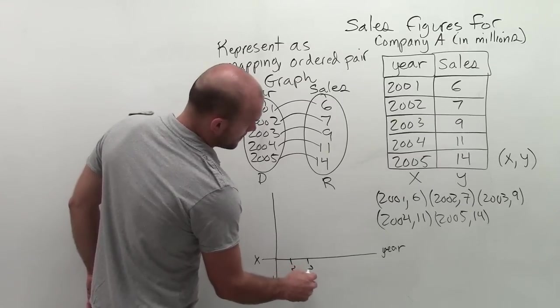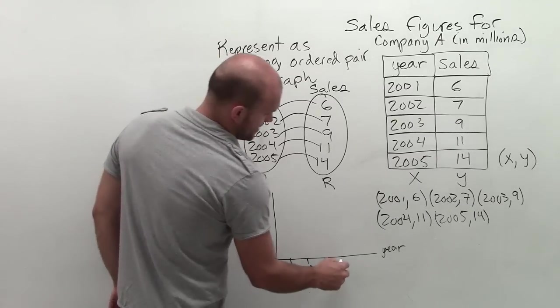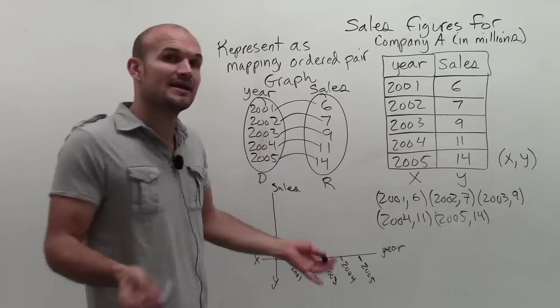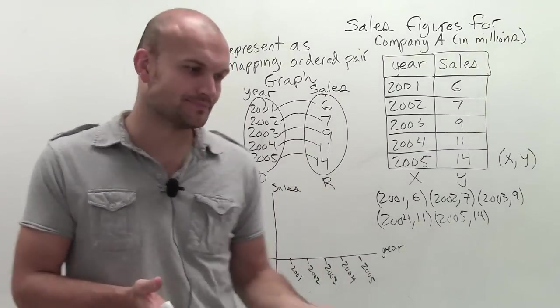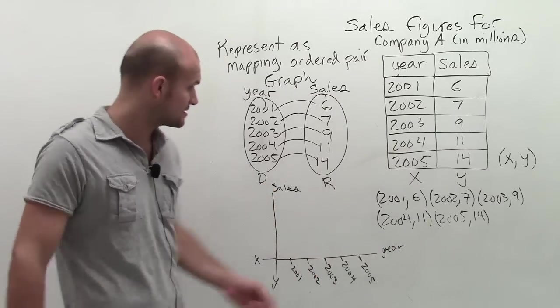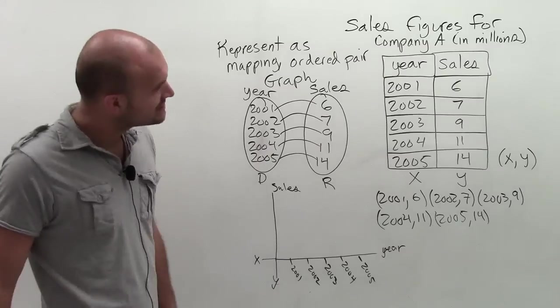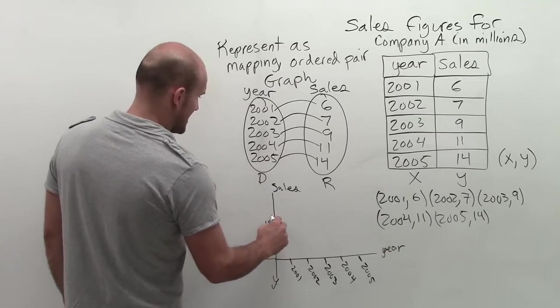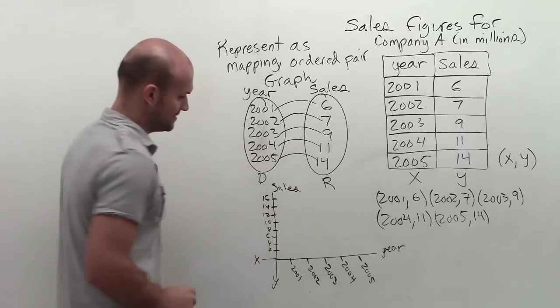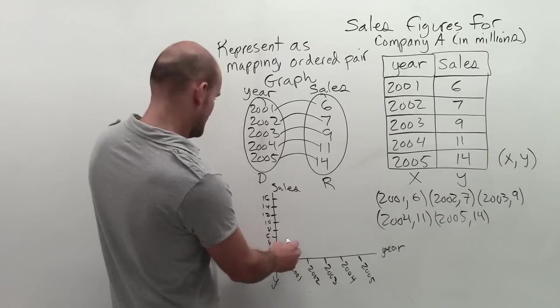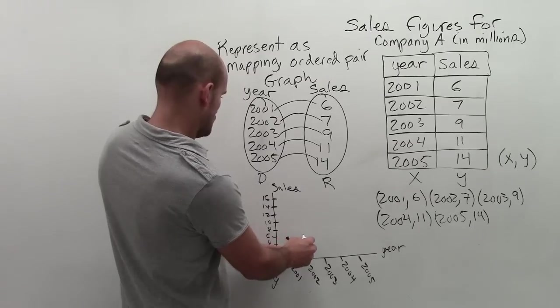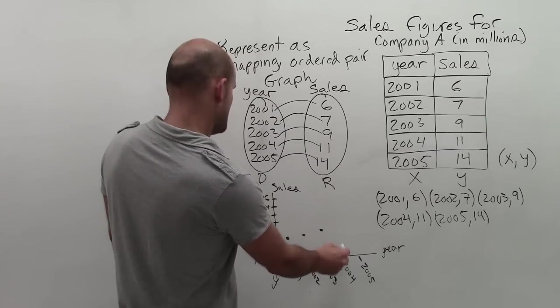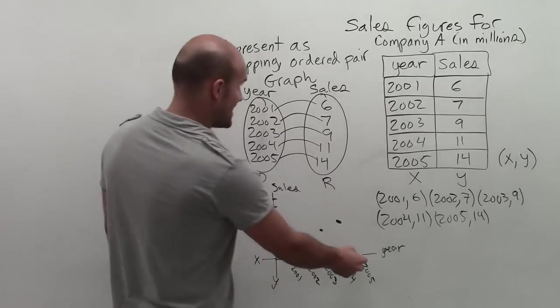2002, 2003, 2004, and 2005. Then my y is going to represent my sales. And again, when doing a graph, you're going to have to create, you know, how do you want to scale it? Well, here, I was going by ones of years. And so for my sales, I'll maybe go by, let's just go by twos. So I'll have six sales, which would be that coordinate. 2002, I had seven, which would just be a little bit higher, but not up to eight. 2003, I had nine sales. 2004, I had 11. I'm trying to do my best here. And 2005, I had 14.